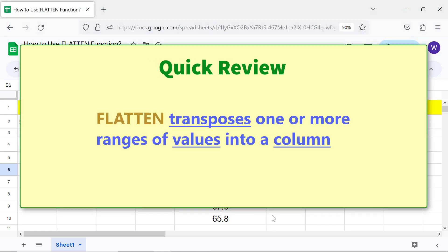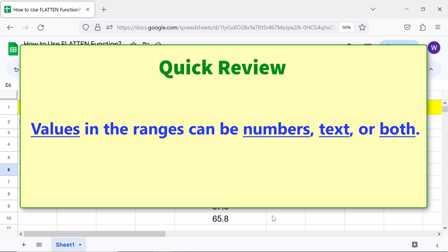Quick review: Flatten transposes one or more ranges of values into a column. Values in the ranges can be numbers, text, or both.